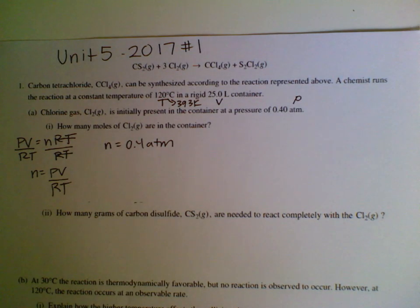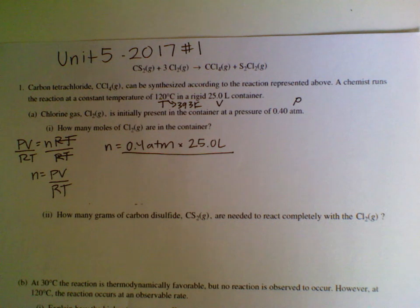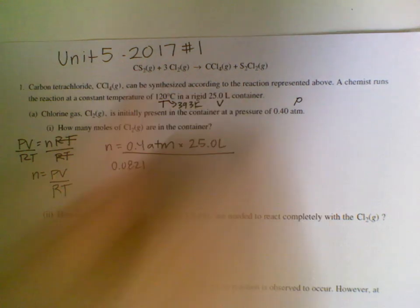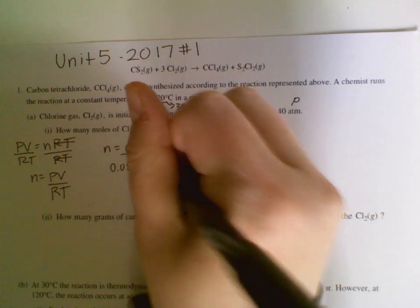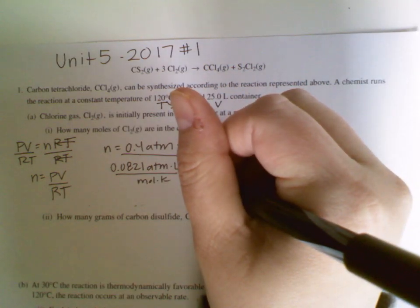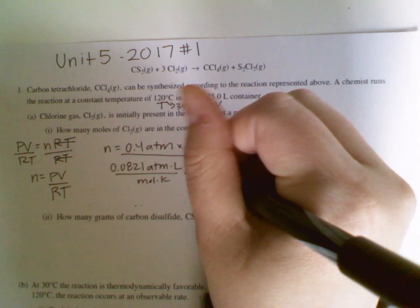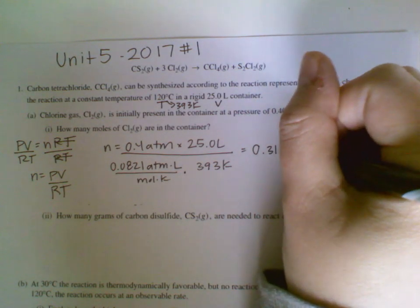N equals P, which is 0.4 ATM. So we've got 0.4 atmospheres times the volume, 25 liters, divided by R. Now, I believe that the R that they give you is slightly different than the 0.0821. You can use their R value or you can use 0.0821. I'm going to use that. And remember, you have to have the units on here to get the point. If you leave the units off, you do not get the point, even though this should be an easy calculation for you. So you have to have the atmospheres, liters, over mole, kelvins. And then you are going to multiply that by the temperature, which is 393 Kelvin. And when you put all of that into your calculator, you end up getting 0.31 moles of Cl2.